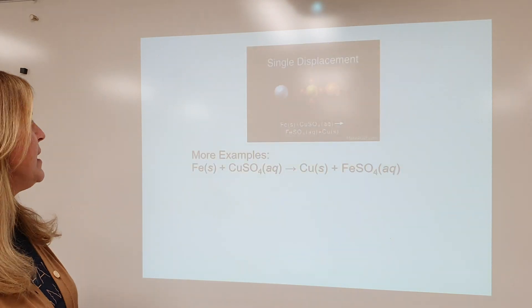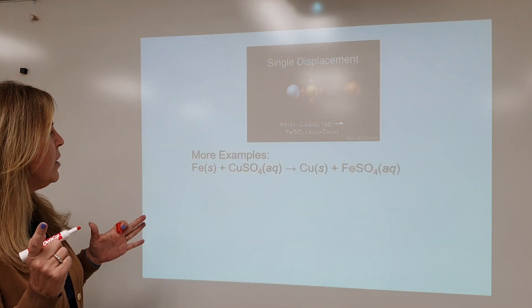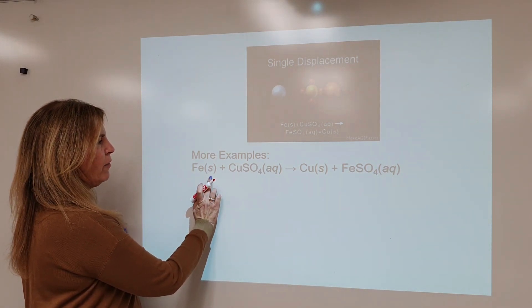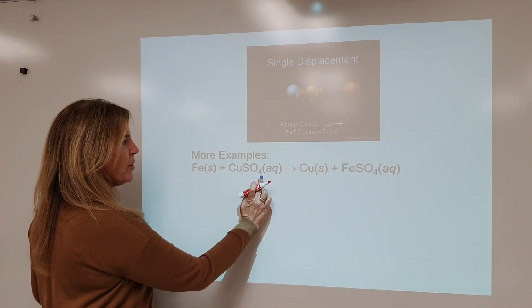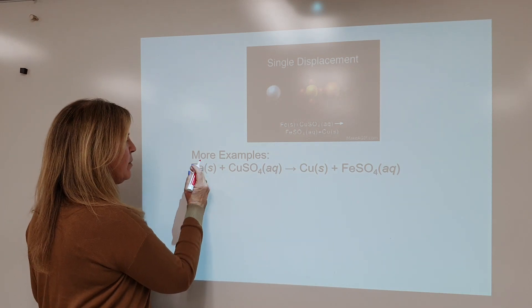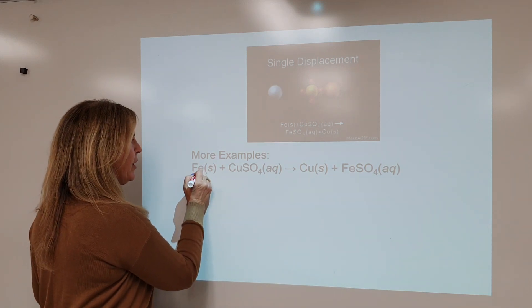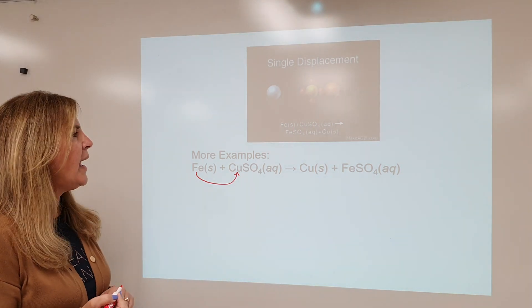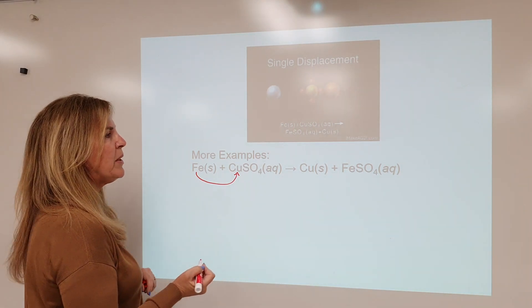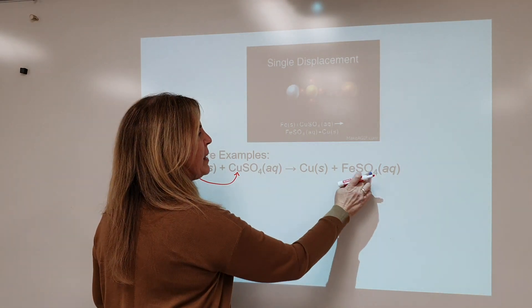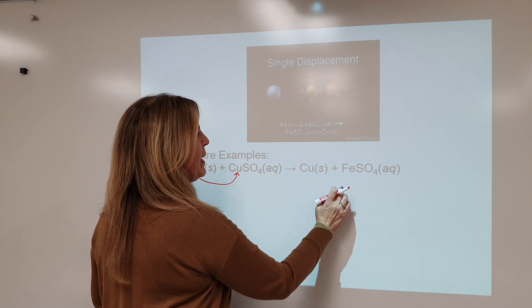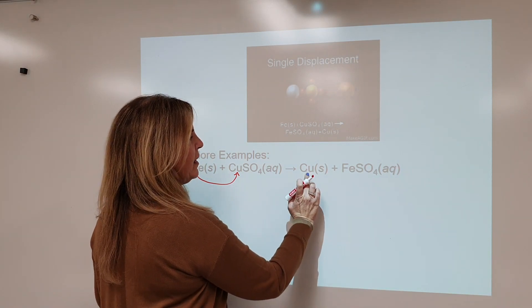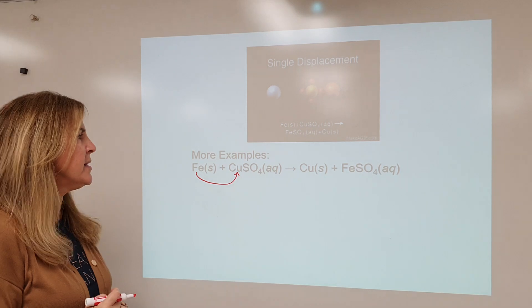Here's another example. We have iron by itself and compound copper sulfate. The iron is going to kick off the copper and replace it, making iron sulfate, and now the copper is by itself.